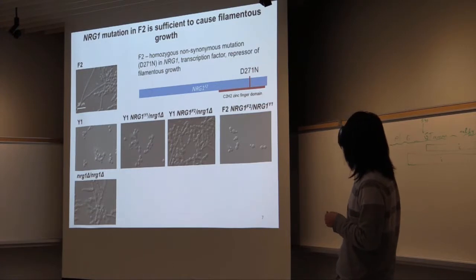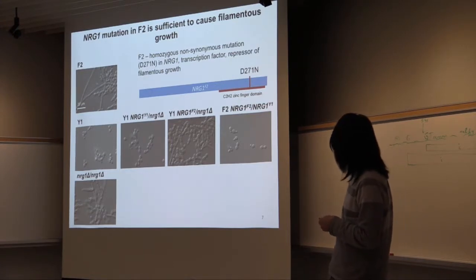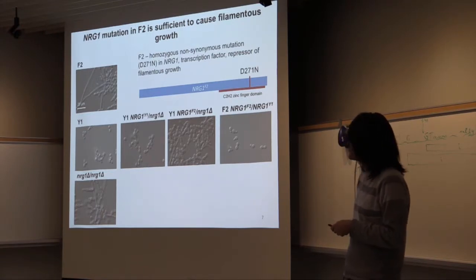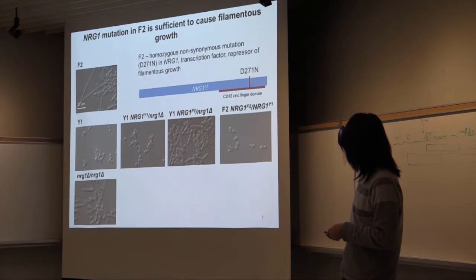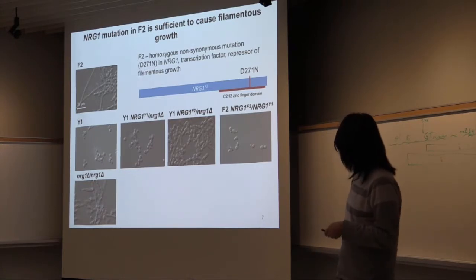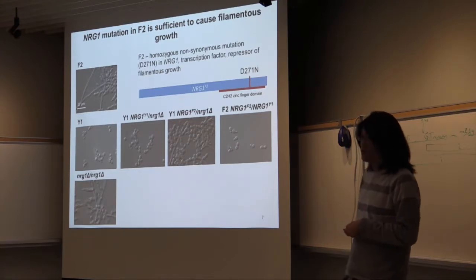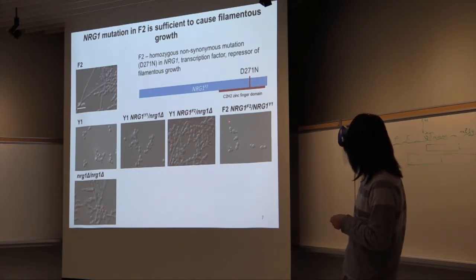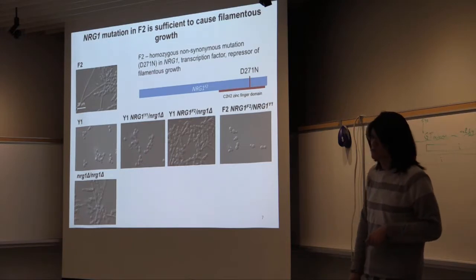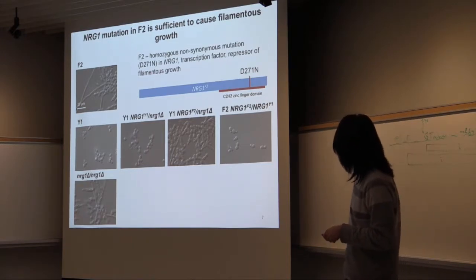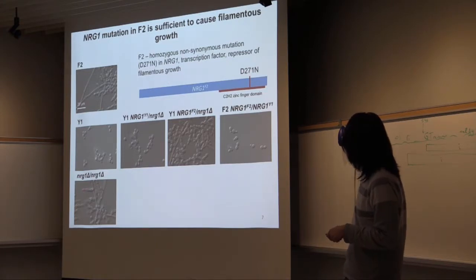Here I'm showing the growth phenotype of the filamentous isolate F2 under standard conditions — you can see it filamenting — and Y1 under the same conditions, growing as yeast. Since Candida albicans is a diploid organism, when I knock out one copy of NRG1 it has an effect, and when I replace the remaining copy with the mutant copy, it now filaments under standard conditions. Conversely, when I introduce a wild-type copy into F2, which usually shows filamentous growth, yeast growth is restored. An NRG1 null strain from a different background confirms this is likely due to loss of function in NRG1.